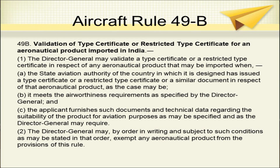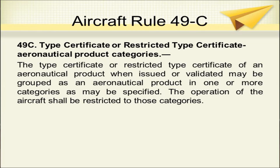The Director General may by order in writing and subject to such conditions exempt any aeronautical product from the provisions of this rule. Rule 49C states that a type certificate or restricted type certificate of an aeronautical product when issued or validated may be grouped as an aeronautical product in one or more categories as may be specified, and the operation of the aircraft shall be restricted to those categories.